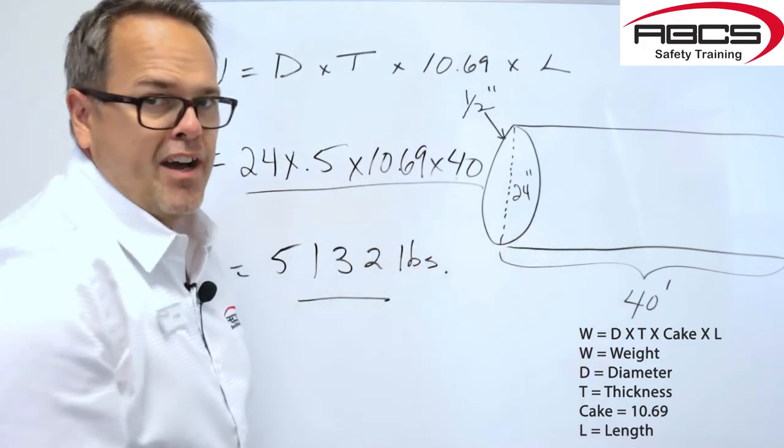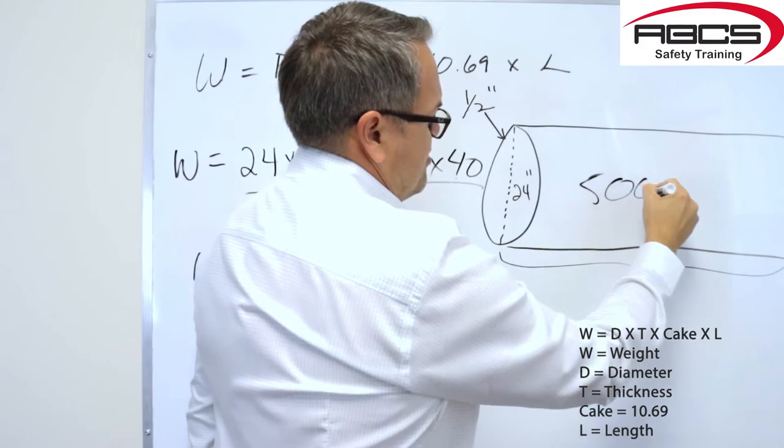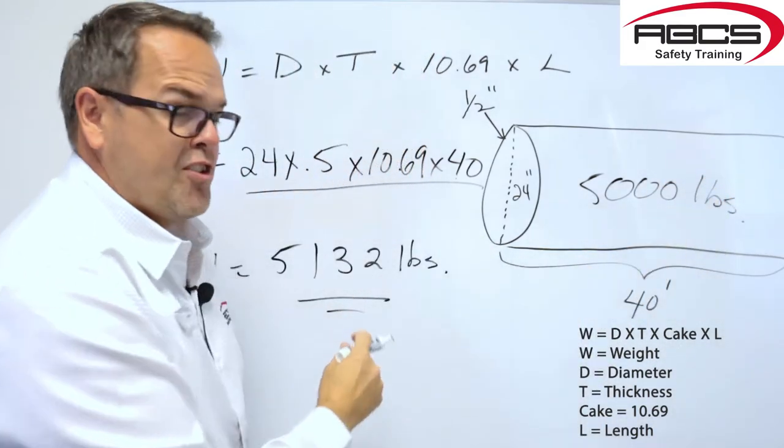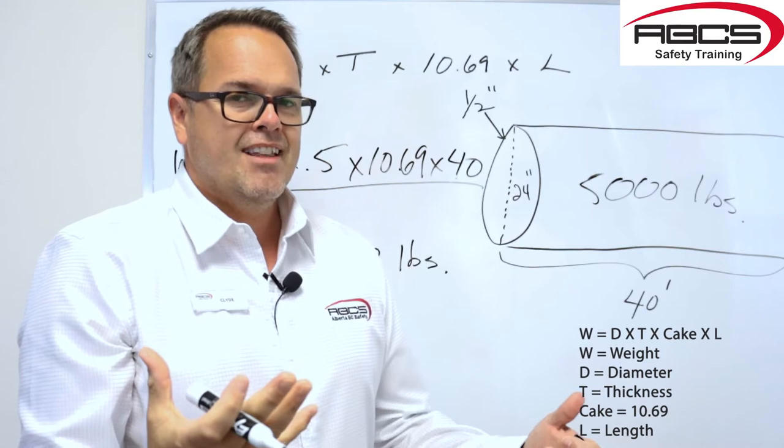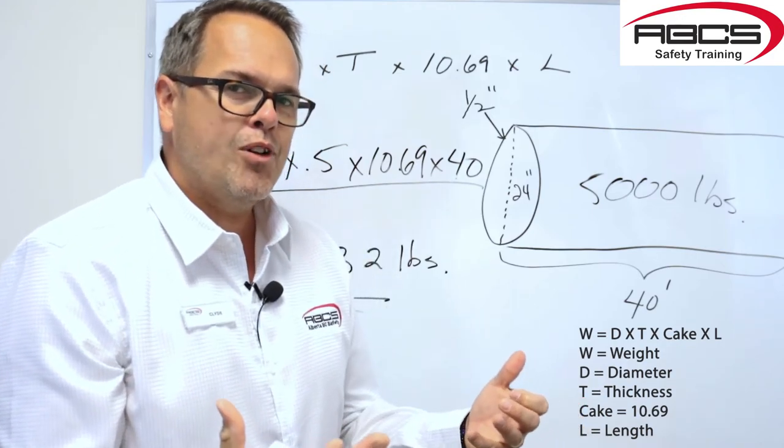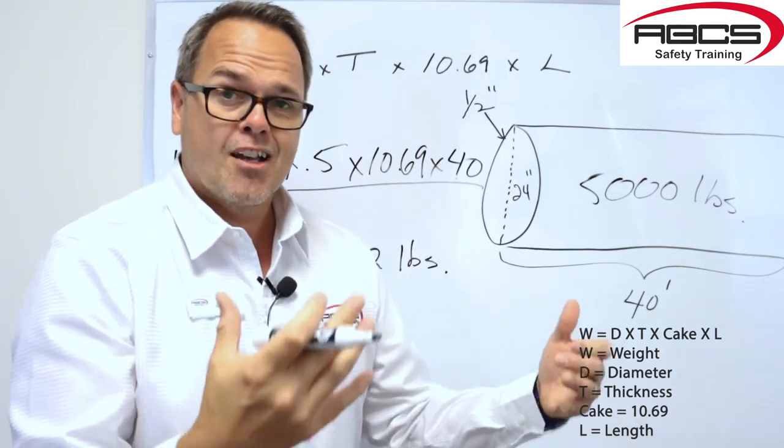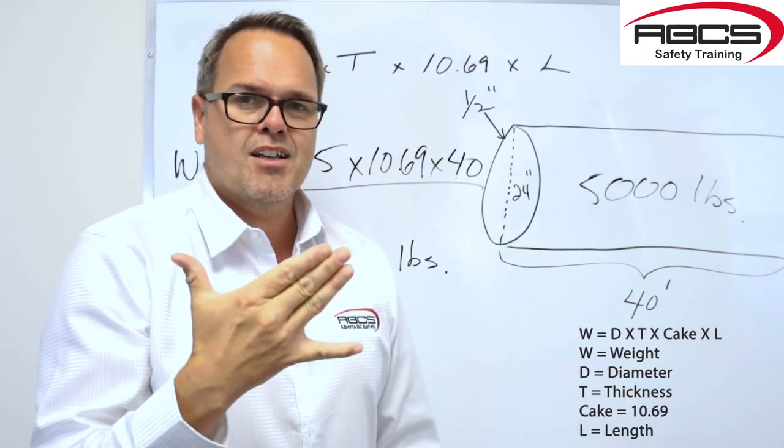Now the actual weight of that pipe is closer to 5,000 pounds. So what you figured out is going to be a little bit heavier. That's good. You always want to add a little bit of weight or even a lot of weight if you're trying to rig something up. Log on and prosper everybody.